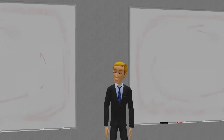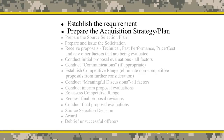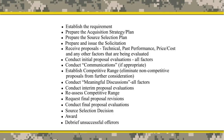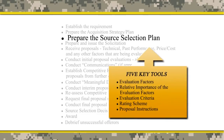The first step involves acquisition planning, where the requirements are established and basic decisions regarding acquisition strategy are addressed. As part of planning, a source selection plan — commonly referred to as the SSP — is also prepared. The SSP serves as uniform guidance on how to conduct the evaluation and select the winner. It identifies the five key tools of source selection: the evaluation factors, the relative importance of the evaluation factors, the evaluation criteria, the rating scheme, and the proposal instructions.